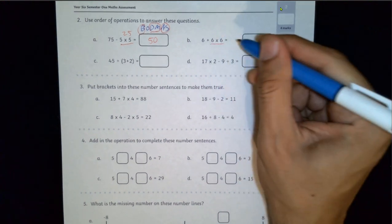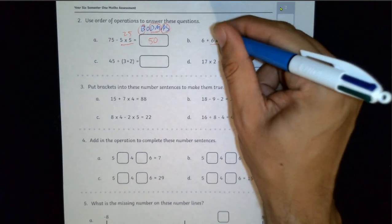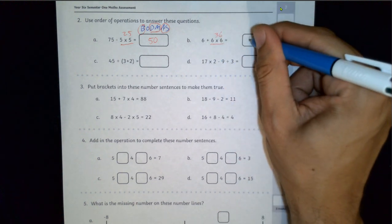B, same thing, multiplication comes first. 6 times 6 is 36, 6 plus 36 is 42.